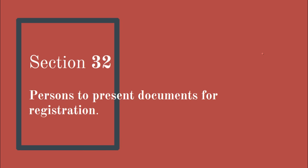Section 32 talks about persons who can present documents for registration. Except in cases mentioned in sections 31, 88, and 89, each document to be registered under this act — whether compulsory or optional — shall be presented at the proper registration office. Who can present it? Three categories: one, the party executing or claiming the document; two, their representative or assignee; or three, their agent duly authorized by power of attorney.